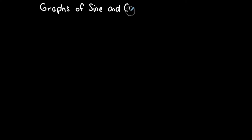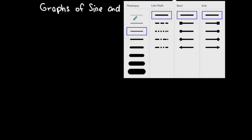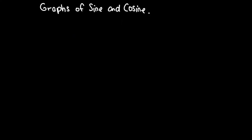This is another video to practice the graphs of sine and cosine. This time I'm going to do some examples including phase shifts. In the last video I did some with vertical shifts and period changes and even a reflection over the x-axis, but I didn't do any with a phase shift.